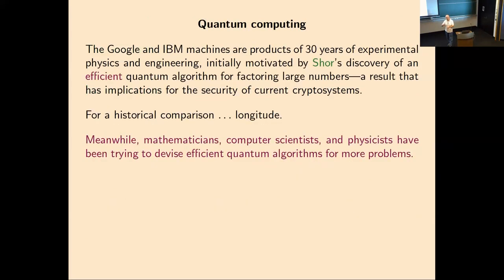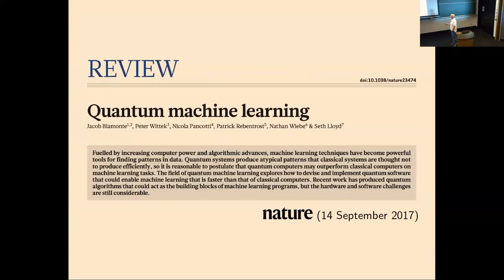Meanwhile, while engineers and experimental physicists have been working on building quantum computers, mathematicians, computer scientists, and theoretical physicists have been trying to devise good quantum algorithms requiring a quantum computer to implement them. Here's an article from 2017 in Nature about prospects for quantum machine learning. They say: 'Machine learning techniques have become powerful tools for finding patterns in data. Quantum systems produce atypical patterns that classical systems are thought not to produce efficiently, so it is reasonable to postulate that quantum computers may outperform classical computers on machine learning tasks.' Had I written that paragraph, I would have said 'hope' instead of 'postulate'.